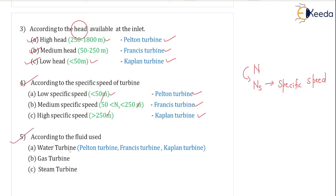The fifth classification is according to the fluid used. Water turbines such as the Pelton turbine, Francis turbine, and Kaplan turbine are good examples of hydraulic turbines. We also have gas turbines — involving intercooling, reheating, and regeneration in the Brayton cycle — and steam turbines operating on the Rankine cycle. However, gas turbines and steam turbines are covered in Thermodynamics; in this chapter we are only going to see water turbines: the Pelton turbine, Francis turbine, and Kaplan turbine.